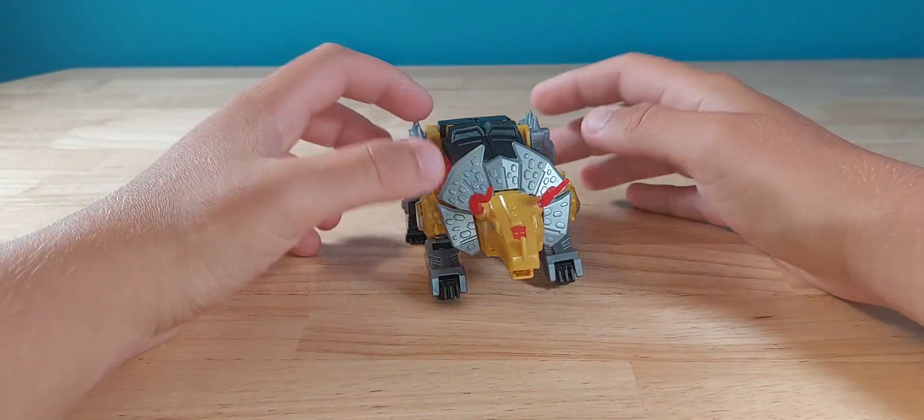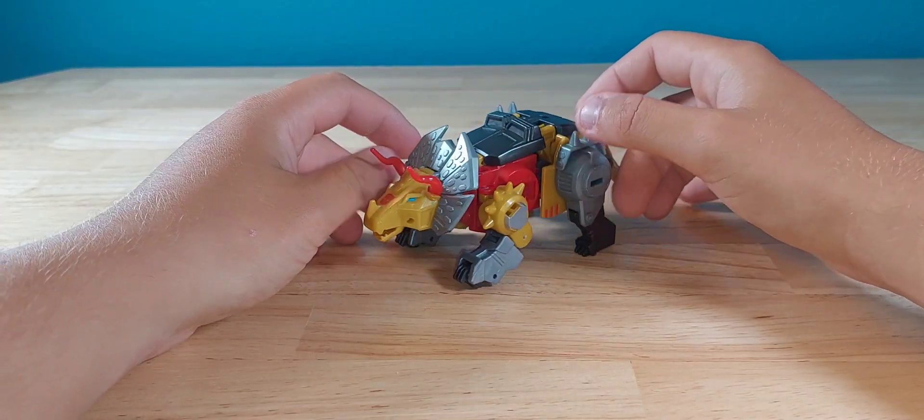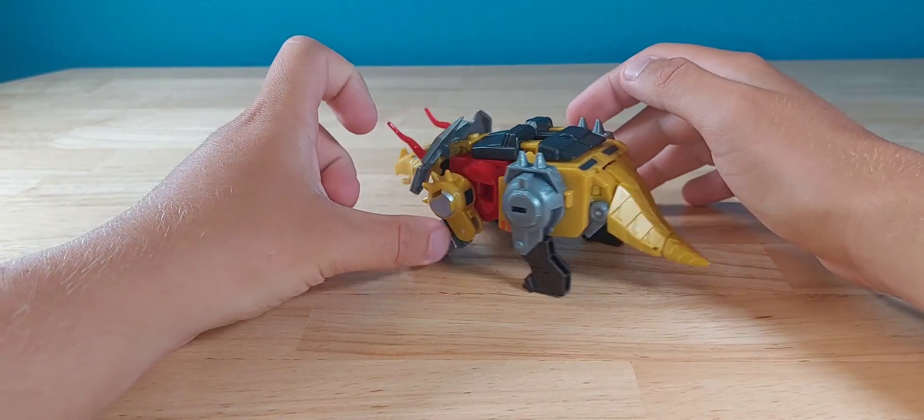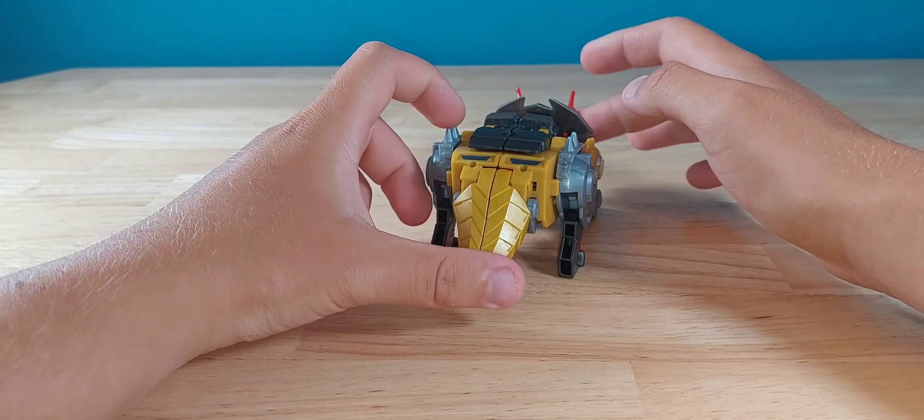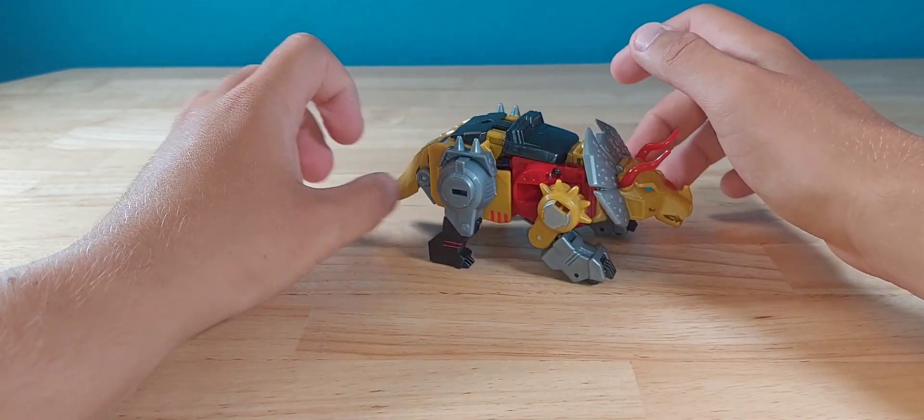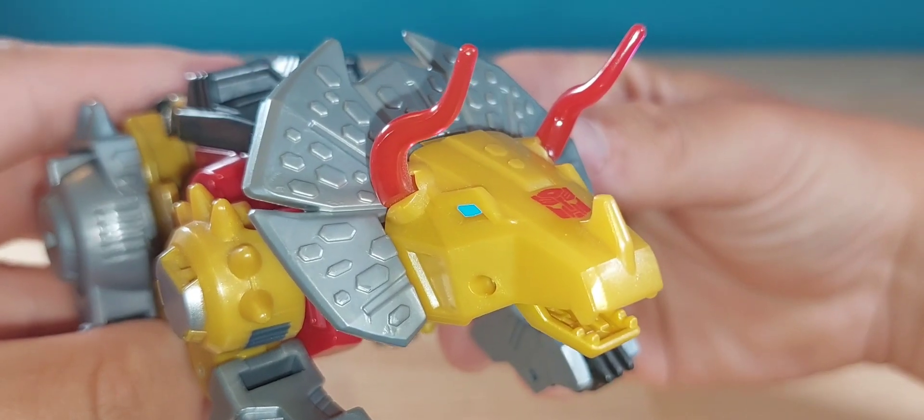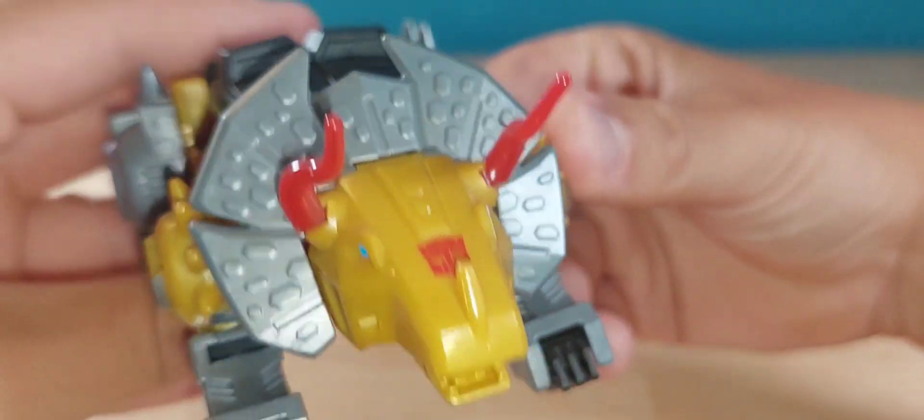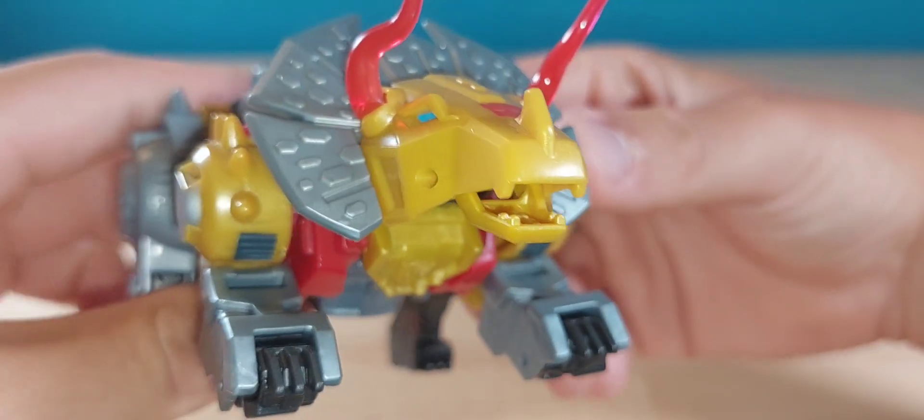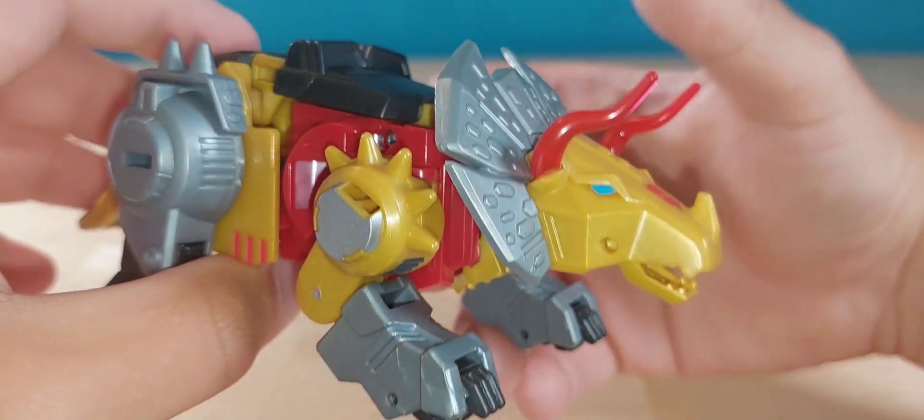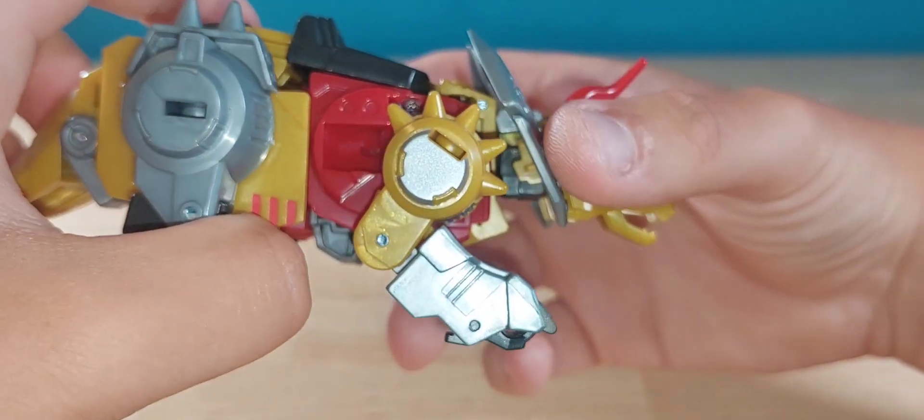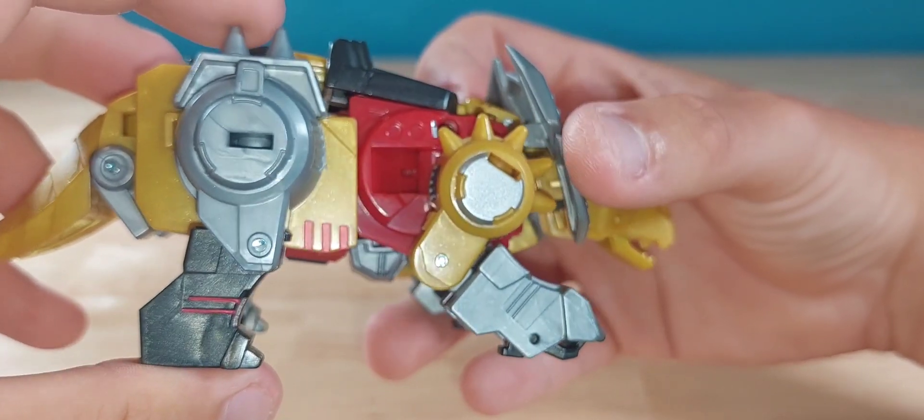Here we have him in his triceratops mode, and not a bad looking one, definitely better than Grimlock who we previously looked at. To get a close-up on all the detail, you get the nice Autobot symbol with the horns, the mouth, the frills nicely detailed, definitely better painted and feeling than Grimlock. Very nice detail all throughout.